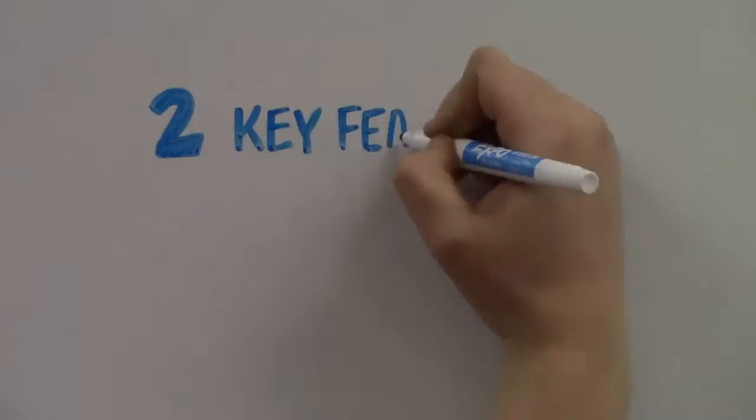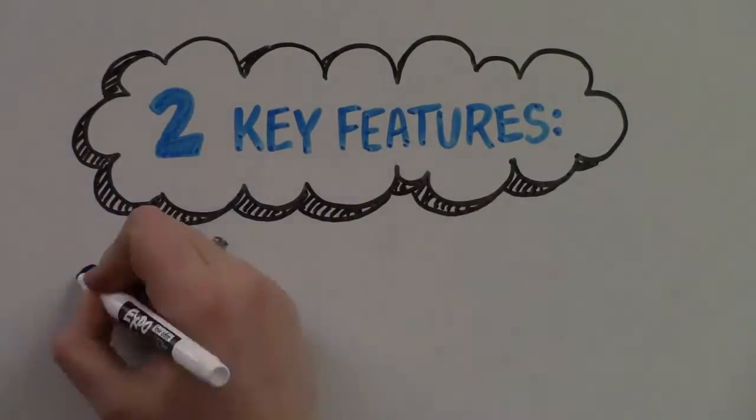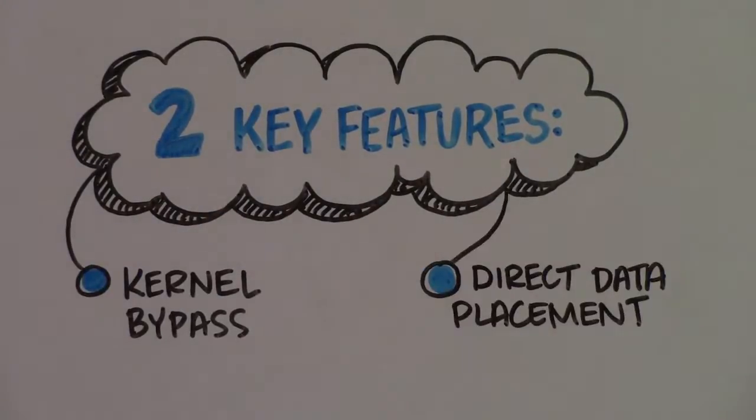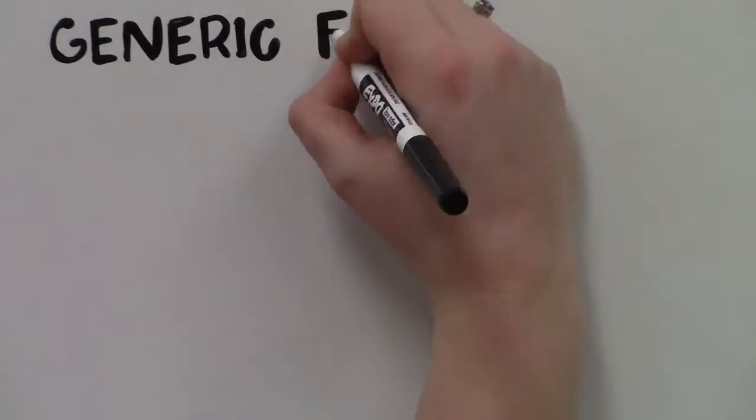Two key features of iWARP RDMA that make it so efficient are kernel bypass and direct data placement. Let's talk about kernel bypass first.